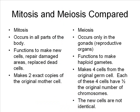A haploid egg fertilized by a haploid sperm forms a diploid zygote with 46 chromosomes. Now let's compare and contrast mitosis and meiosis. Mitosis occurs in all parts of the body, whereas meiosis occurs only in the gonads or the reproductive organs. Mitosis functions to make new cells, repair damaged areas, replace dead cells, and also to help you grow. In some organisms, mitosis is also responsible for asexual reproduction.